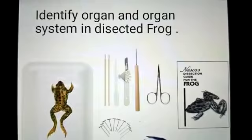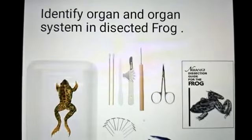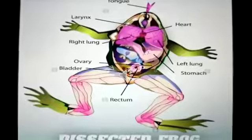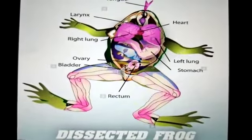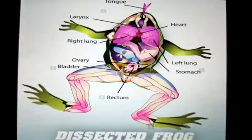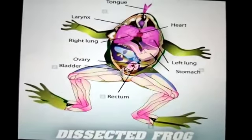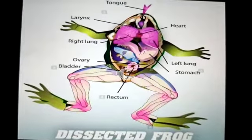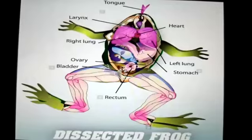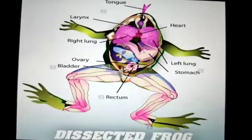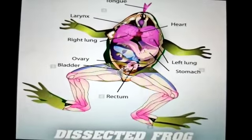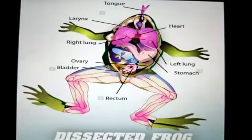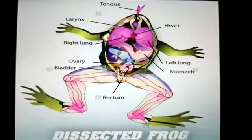Now come toward the next practical: identify organs and organ systems in a dissected frog. Here is the diagram of a dissected frog in which you can see the organs and organ systems. Number one is larynx, then heart, pair of lungs — right lung and left lung — stomach, pair of ovaries, bladder, and rectum.